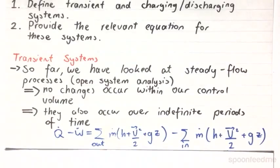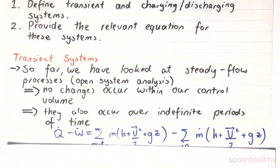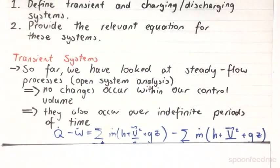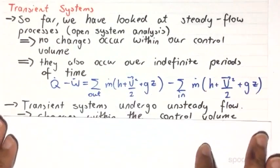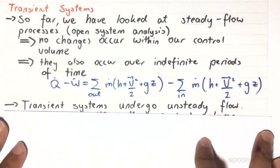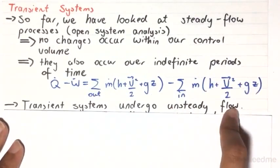So what happens when we actually do have our defined periods of time, and then after this defined period of time, things are sort of closed off or open, for example? What we have then are transient systems, which are actually unsteady flow processes.